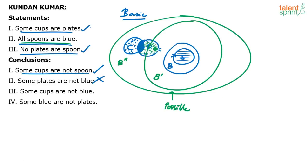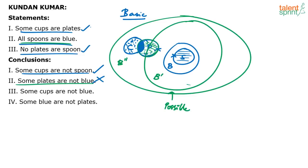That is the reason some plates are not blue is false. Conclusion two cleared the basic diagram, but it failed in the possible diagram — specifically it failed in the B double dash possible diagram. So the point is: don't just depend on the basic diagram. You have to check the possible diagrams also when a conclusion follows the basic diagram.